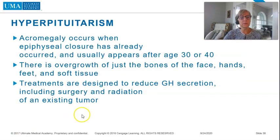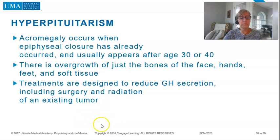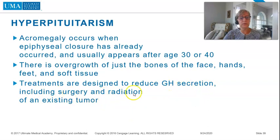Acromegaly occurs when epiphyseal closure has already occurred and usually appears around age 30 or 40. There is an overgrowth of just the bones of the face, hands, feet, and soft tissue. Treatments are designed to reduce GH secretion, including surgery and radiation of the existing tumor.